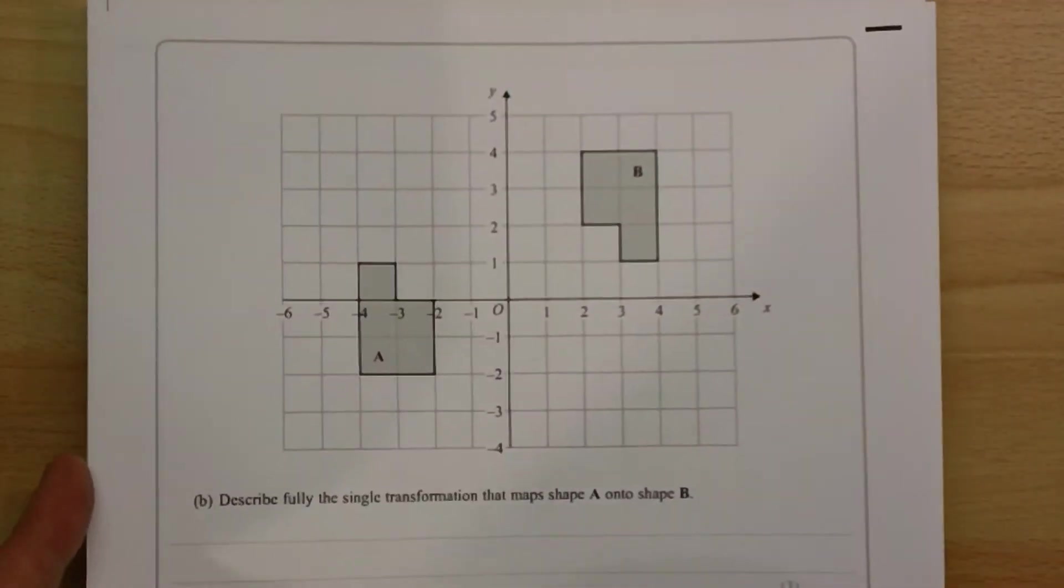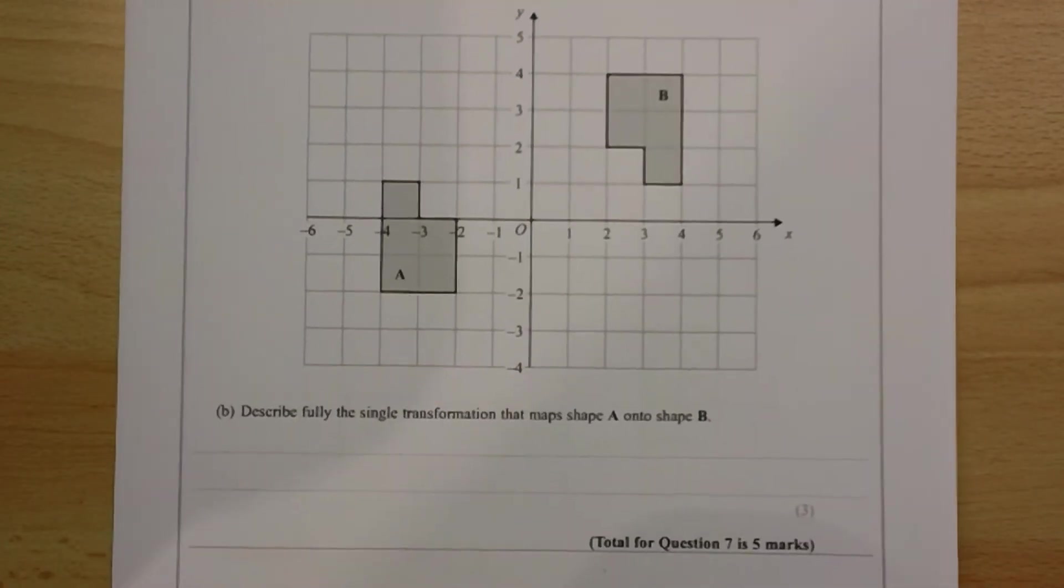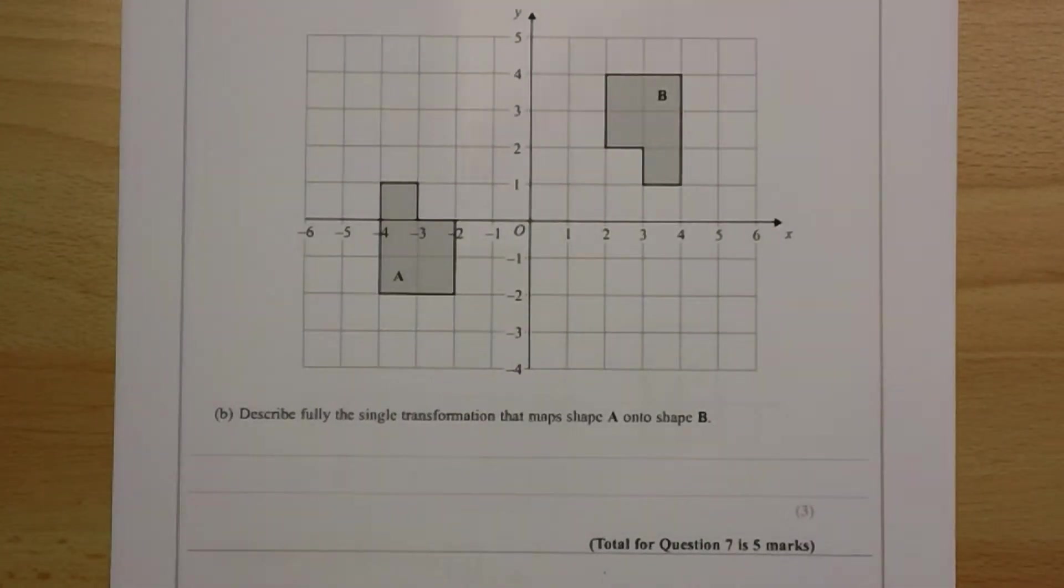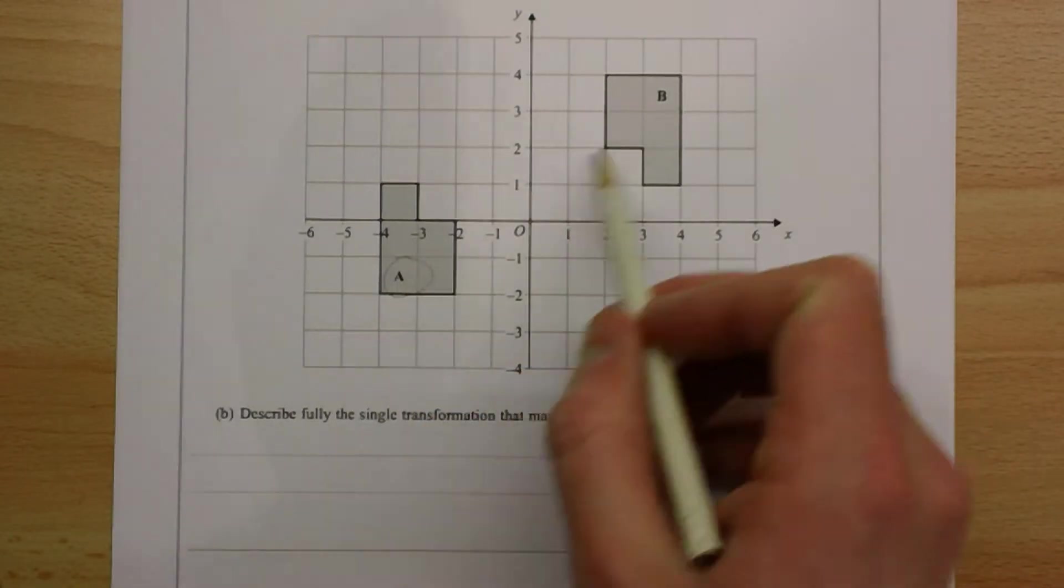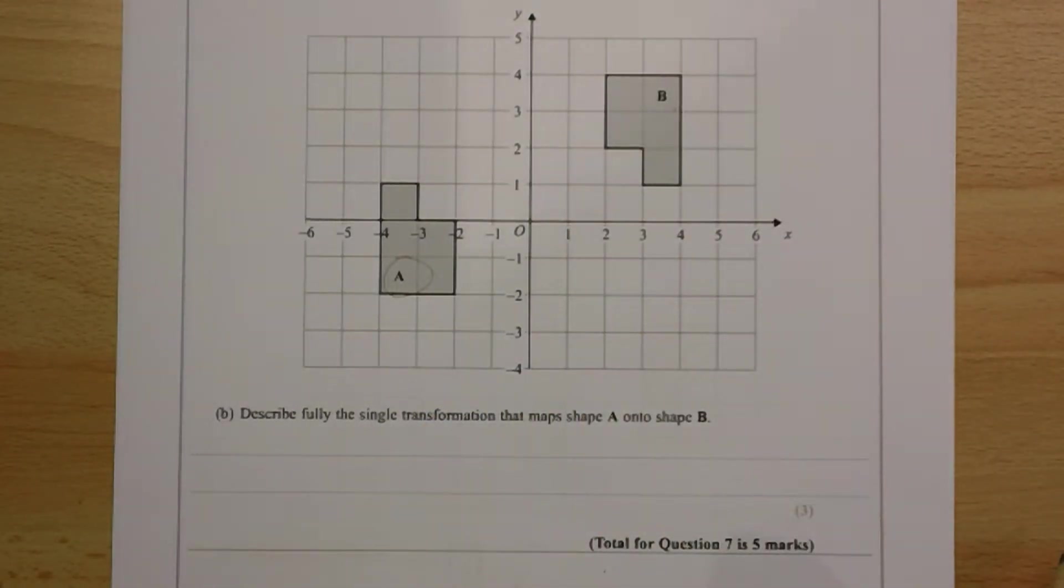And part B. Describe the single transformation that maps shape A onto shape B. So starting with this shape here, ending up with this one. What's happened? Well, there's been no change of size, so it's not an enlargement.